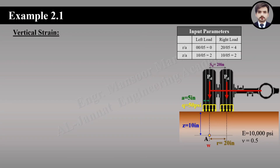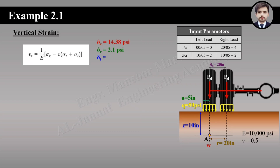For vertical strain, the equation is: εZ = (1/E) × (σZ − ν(σR + σT)). Substituting all values, the vertical strain at point A is 0.001298.